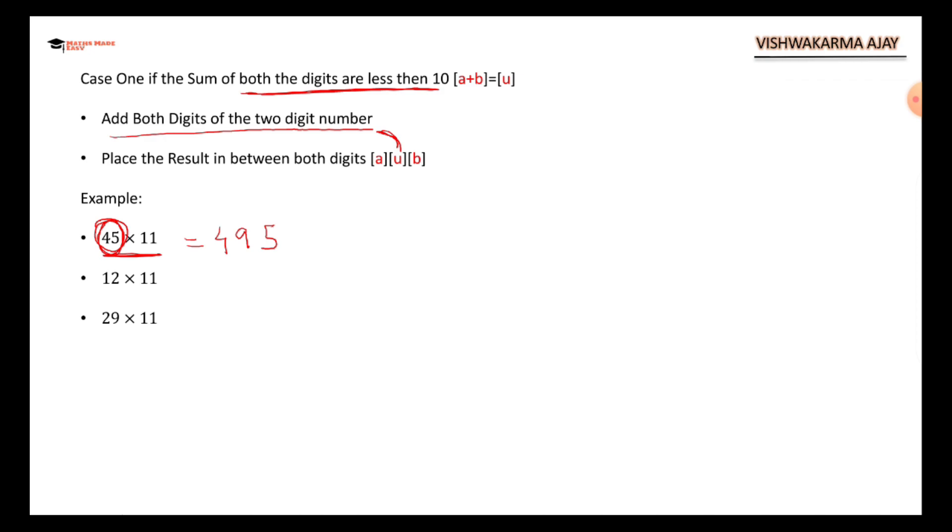12 times 11. 2 plus 1 is 3. So 1, 2, between there is going to be 3. That's it, done.